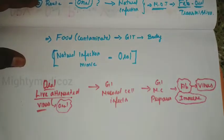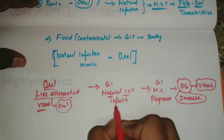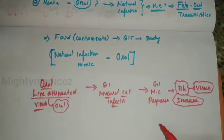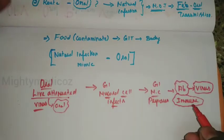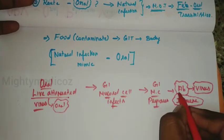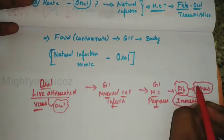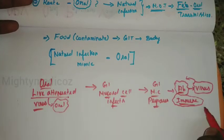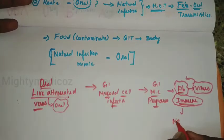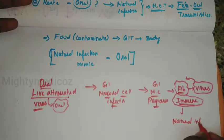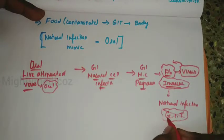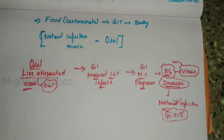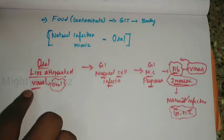When given orally, the live attenuated virus infects the mucosal cells of the GI tract. The body then generates antibodies against those live attenuated viruses and prepares the immune system. So, if there is a natural infection, the immune system within the GI tract is already prepared. This is why we give OPV via the oral route with the live attenuated vaccine.